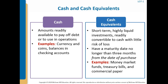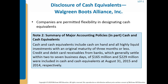Cash equivalents include money market funds, treasury bills, and commercial paper. To be classified as cash equivalents, these investments must have a maturity date no longer than three months from the date of purchase. Companies are permitted flexibility in designating cash equivalents and must establish individual policies regarding which short-term, highly liquid investments are classified as cash equivalents. A company's policy should be consistent with the usual motivation for acquiring these investments.